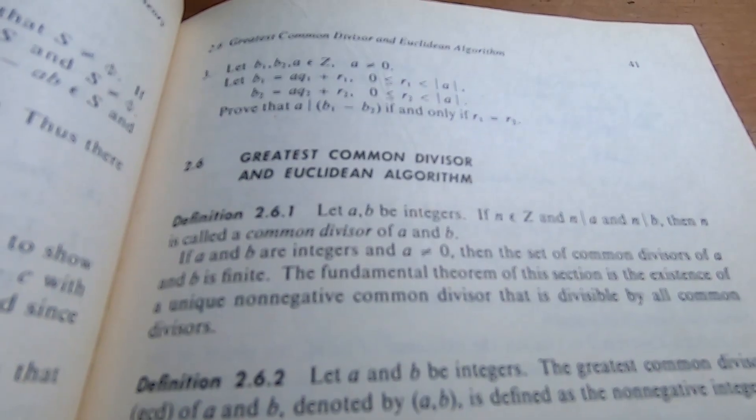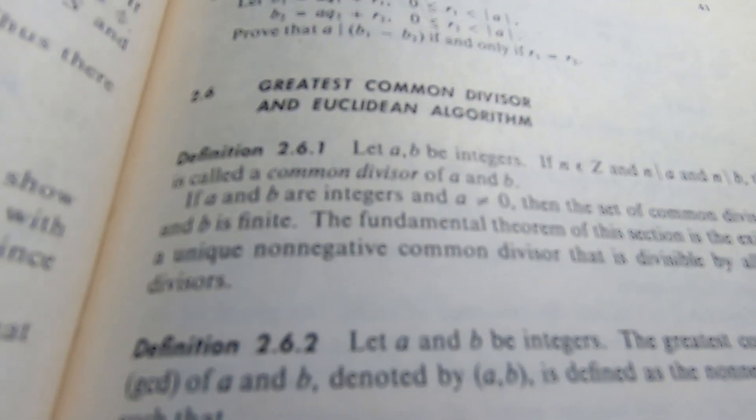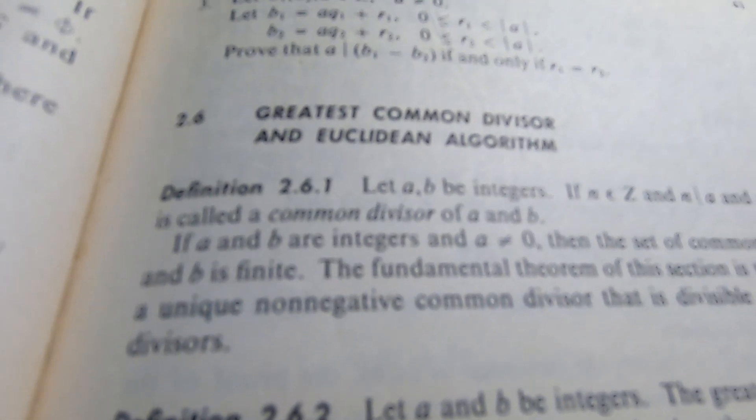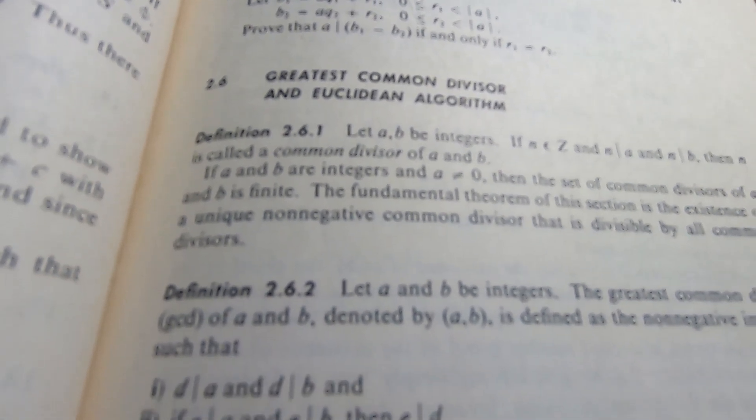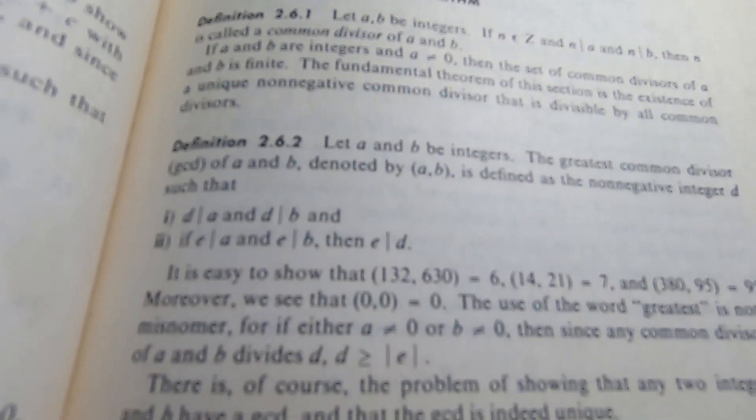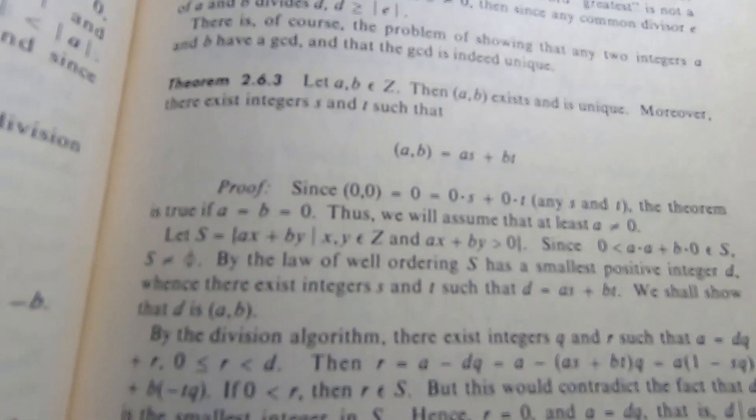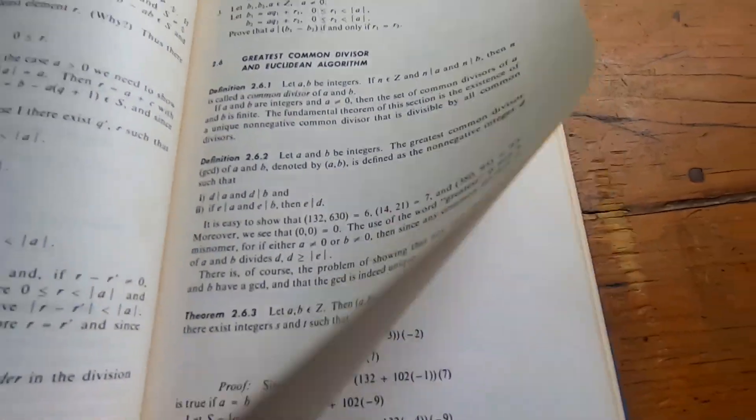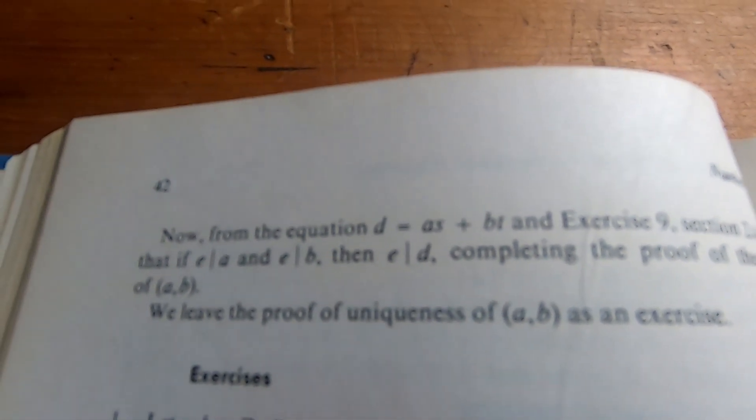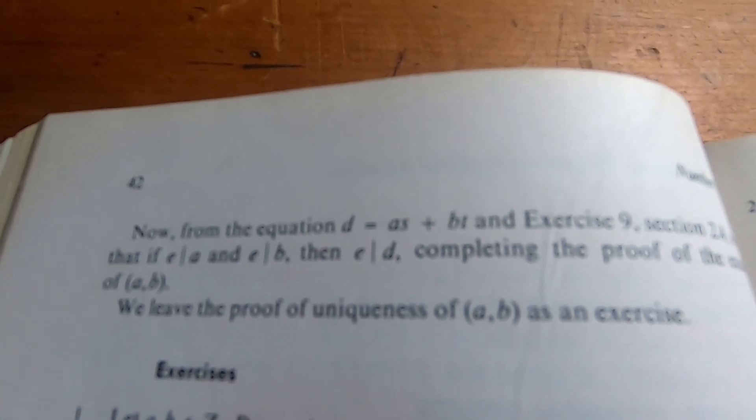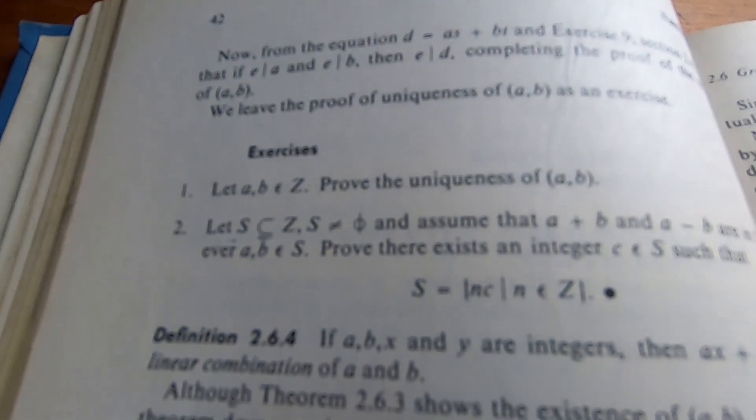So the book takes a really interesting approach when it comes to the way it's laid out. So for example, this is 2.6, which is on The Greatest Common Divisor and the Euclidean Algorithm. So it goes through, gives you some definitions, as most books do. It gives you a proof. I'm going to go ahead and turn the page now so you see what I'm talking about. So there's the end of the proof, and it says we leave part of the uniqueness as an exercise. And then they give you some exercises.